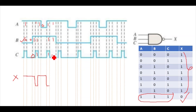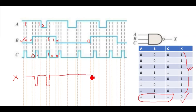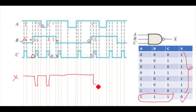Here C is zero from this point to here, so the output will again become one and remain one till this value. Now B is zero till this value, so no need to check — it will remain one for this whole interval. At this value A is one, B is one, but C is zero, so it will remain one. Next, A is one, B is one, and C is also one, so it will again become zero.